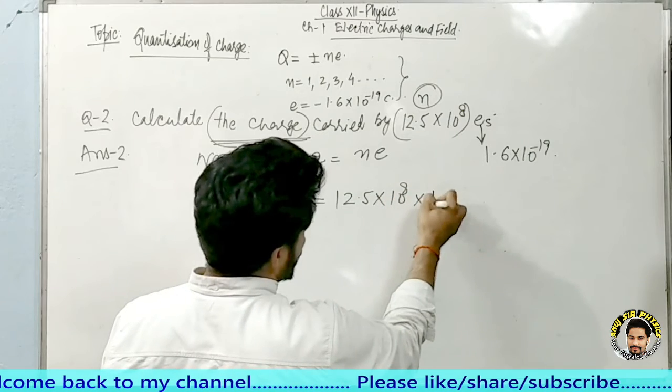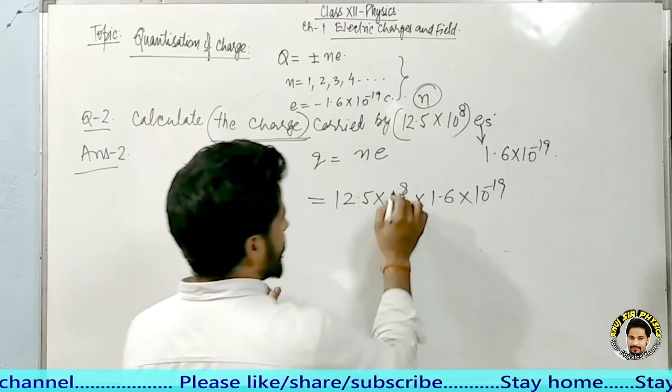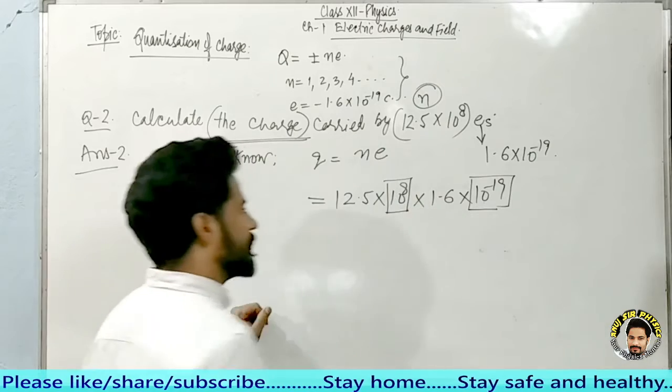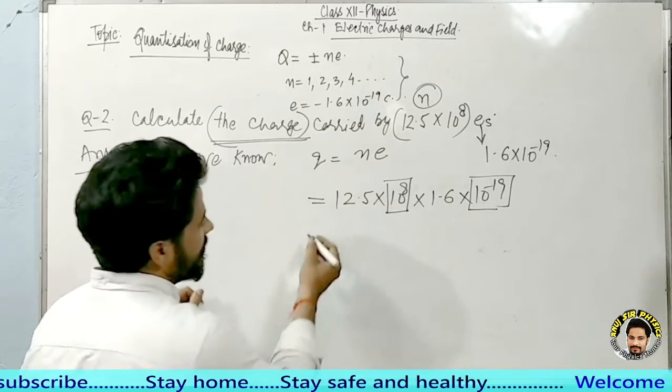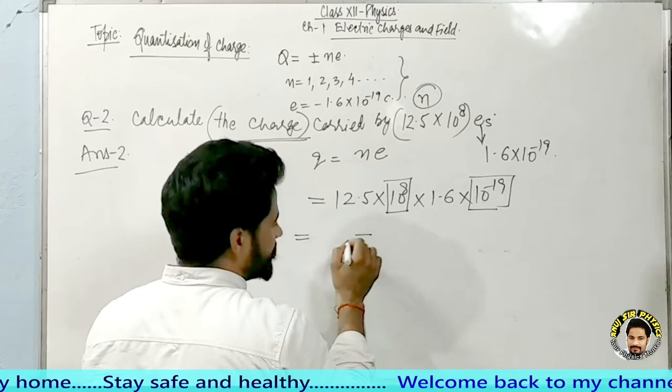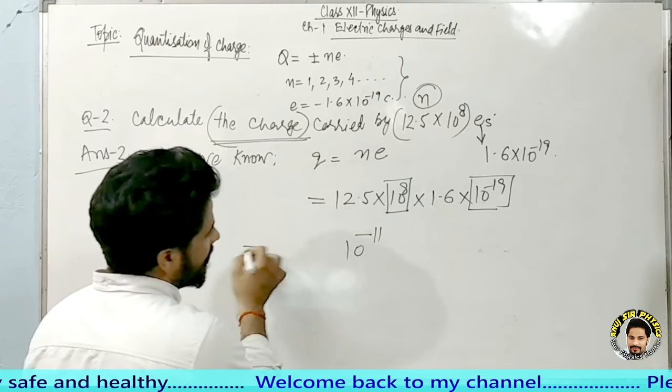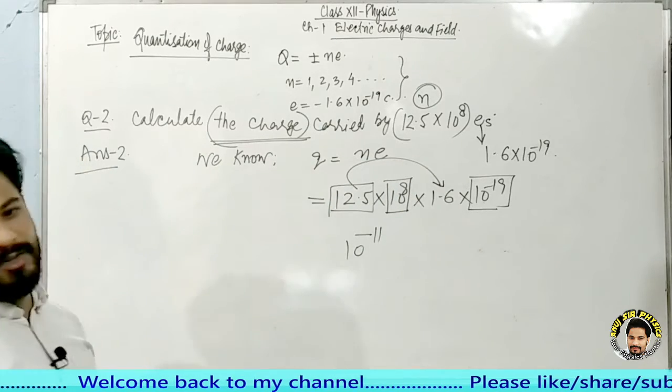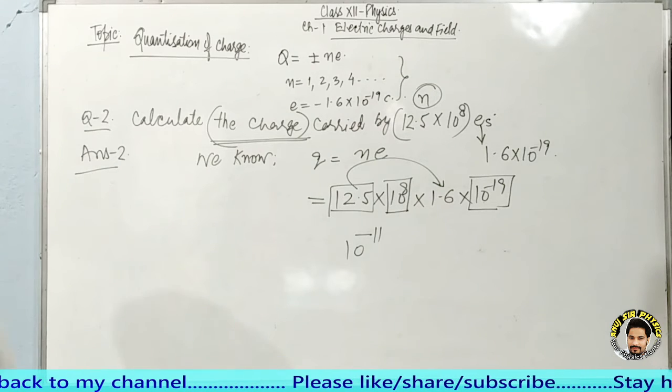Now you can easily solve this: 12.5 into 10 to the power 8 into 1.6 into 10 to the power minus 19. I had given you a trick and some suggestions in the previous video that first you should accommodate the 10 to the powers, arrange them first. So this power will be minus 19 and this is 8, so it will become minus 11. 10 to the power minus 11. Now multiply 12.5 and 1.6 together. This way when you calculate this, the answer will be minus 2.0